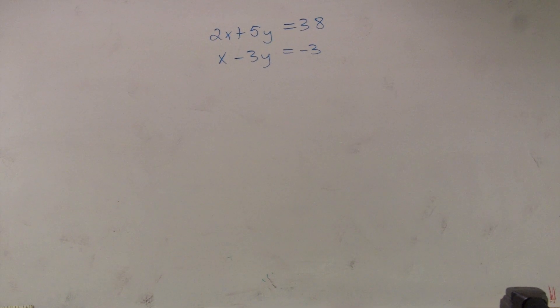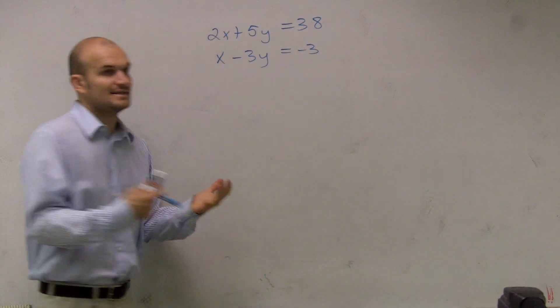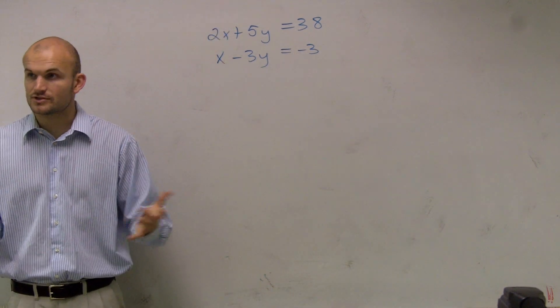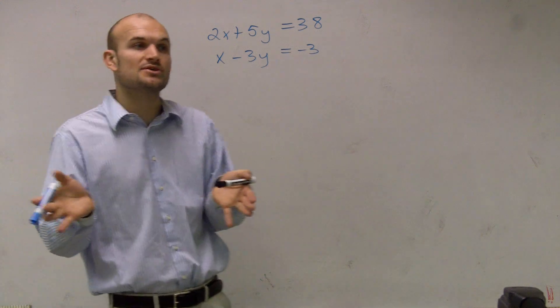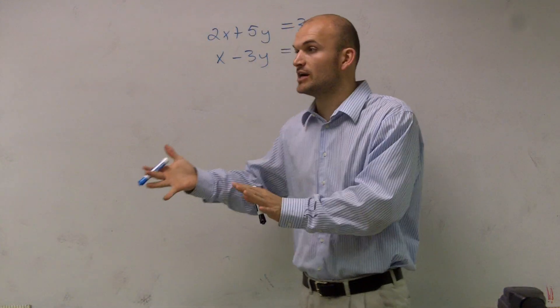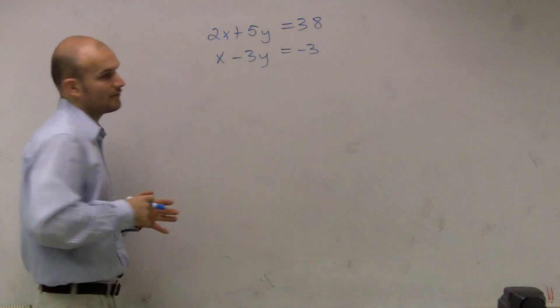So if I was going to solve this by substitution, what I want to make sure I do is I need to have a variable solved by itself. So I need to get x equals or y equals. Because then what I'm going to do is I'm going to substitute the value of one of those variables into the other equation. So I need to solve for x or y.